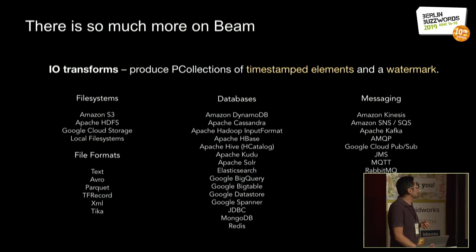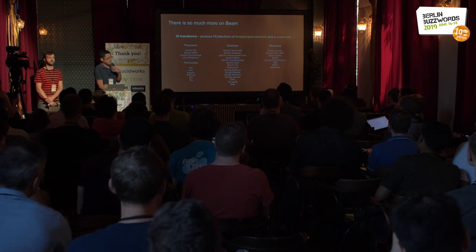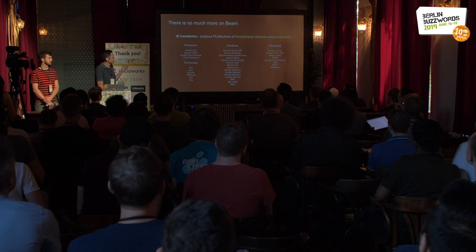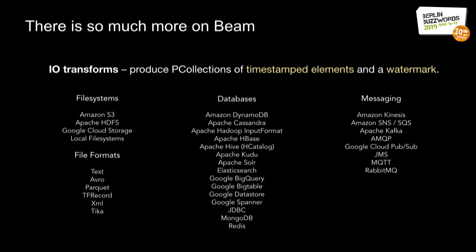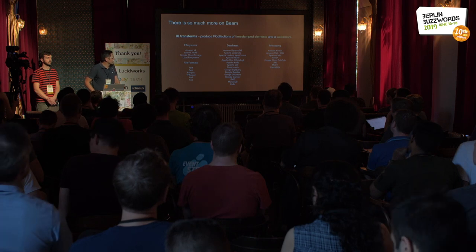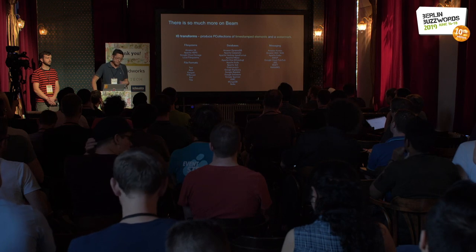Of course, we need to get data in and out of pipelines. Beam has a set of connectors that are essentially transforms producing collections of elements. These elements are timestamped because Beam supports the streaming dimension of processing, including windowing and the concept of watermarks — an approximation of event time progress provided by the source. We have support for the most commonly used file systems, file formats, databases, and messaging systems, including Apache ecosystem tools, S3 as a native file system, and messaging systems like Google PubSub and Kafka.